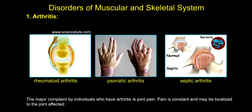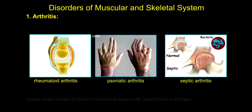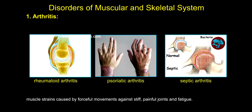The major complaint by individuals who have arthritis is joint pain. Pain is constant and may be localized to the joint affected. The pain from arthritis is due to inflammation around the joint, damage to the joint from disease, daily wear and tear, muscle strains caused by forceful movements against stiff painful joints, and fatigue.